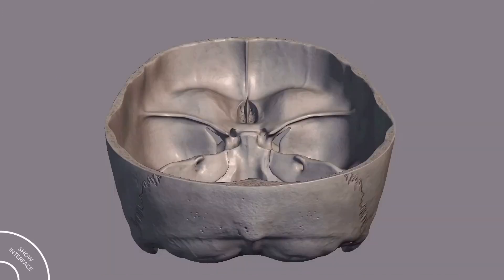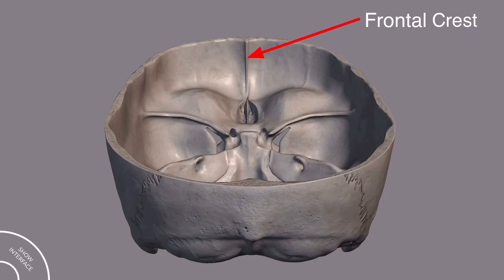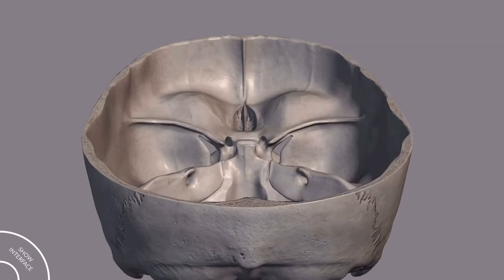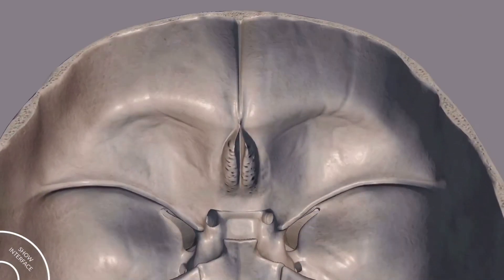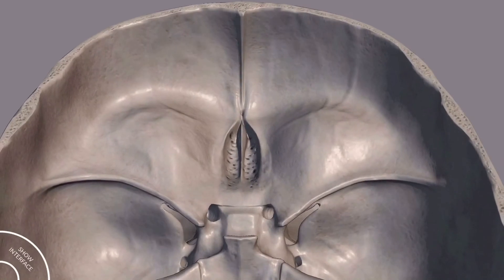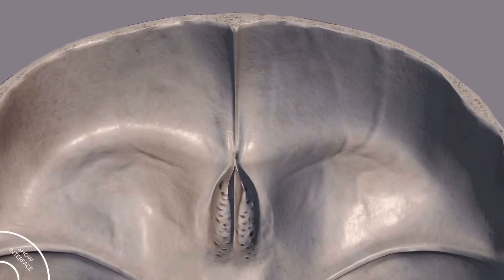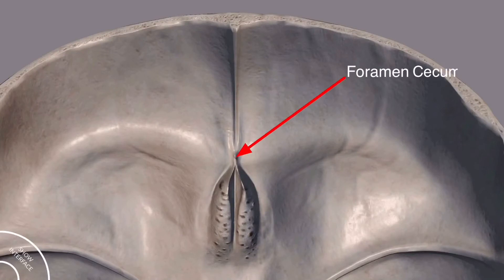Also on the internal side in the midline there is a crest called the frontal crest, and below the crest at the junction of the frontal and the ethmoid bone, a foramen is present called the foramen cecum.